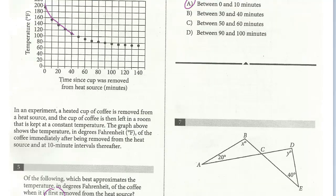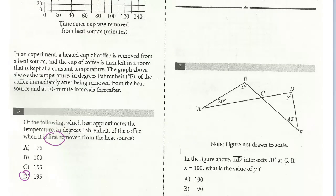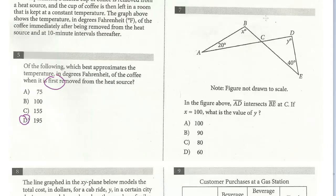Let's take a look at number 7, the last question on this page. Note: figure not drawn to scale. In the figure above, line AD intersects line BE at C. If X is 100, what's the value of Y? This is a straightforward geometry question. We've got two lines that intersect at C, and we're given that X is 100. We know we have a triangle — even though it's not drawn to scale, a triangle adds up to 180, so the third angle is 60.